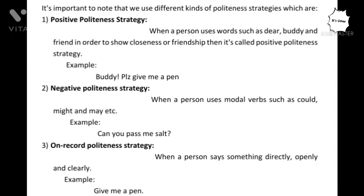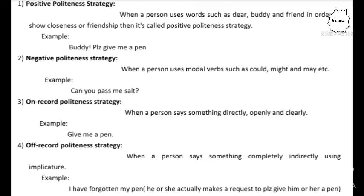The third type of strategy is called on-record strategy. On-record strategy means using words that are direct — saying something directly, openly, and clearly. For instance, if someone says 'let's have a cup of tea' and you directly say 'no, I don't want,' this kind of direct response is called on-record strategy.